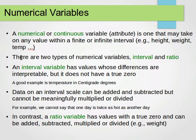For numerical variables, we actually have two types. We can have an interval or a ratio numerical variable. An interval variable has values whose differences are interpretable, but it does not have a true zero.